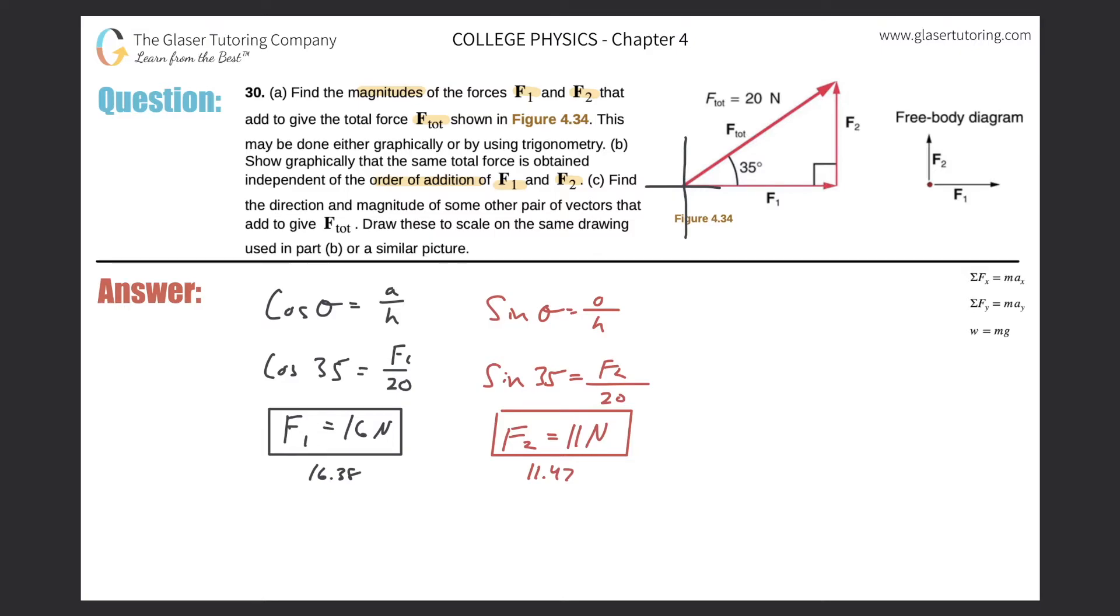So basically what they did, they put down F1 first. They started at the origin. They put F1 here, and then they added F2 to it. Now, instead of going in that order, instead of doing F1 and then F2, they want to see if we would get the same hypotenuse if we did it the other way. Meaning if we did F2 first and then F1.